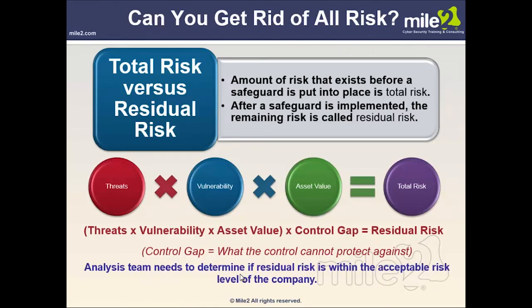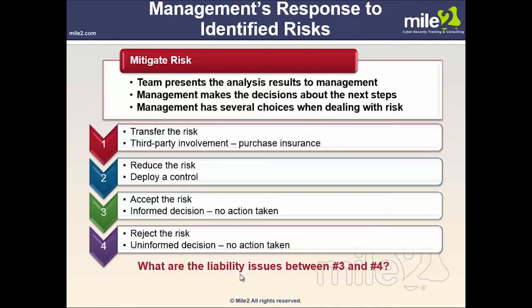Can you get rid of all risk? Looking at total risk versus residual risk: the amount of risk before a safeguard is put in place is called total risk. After the safeguard is implemented, the remaining risk is called residual risk. The formula is: Threats × Vulnerabilities × Asset Value × Control Gap = Residual Risk, where the control gap is what the control cannot protect against. The analysis team must determine if the residual risk is within the company's acceptable risk level.